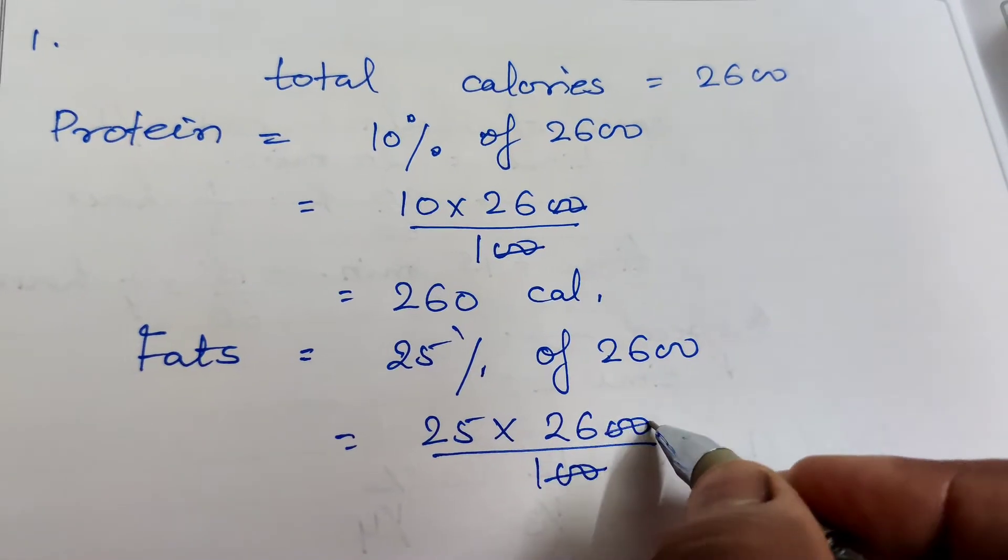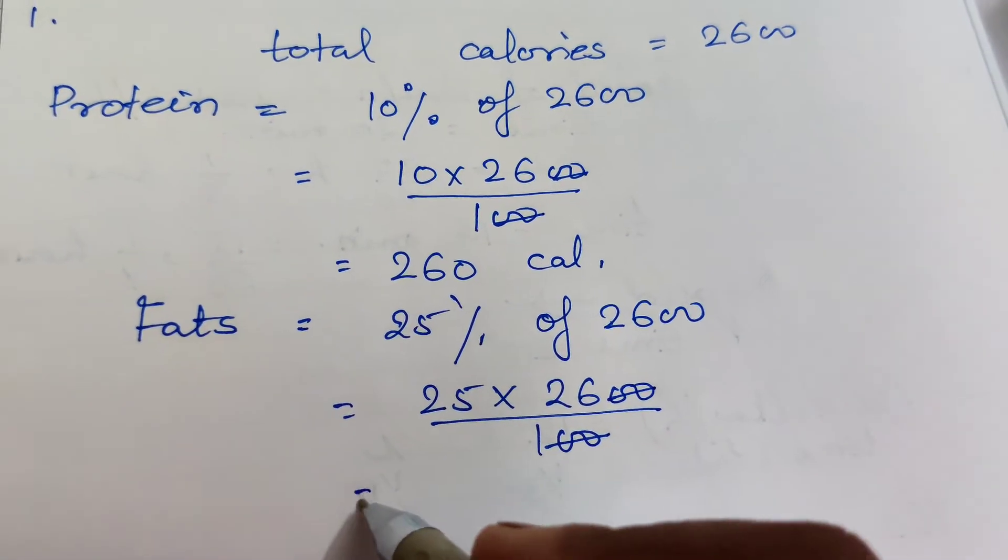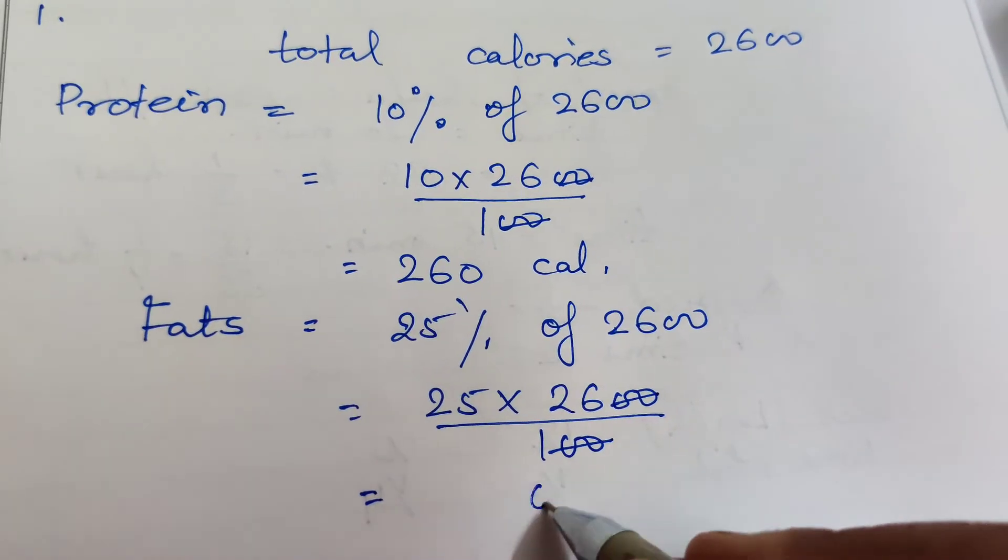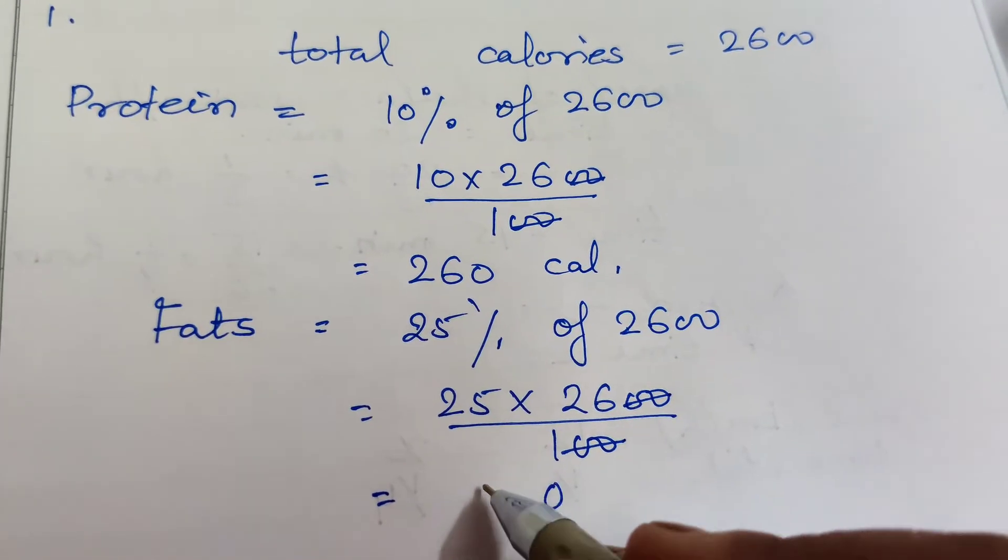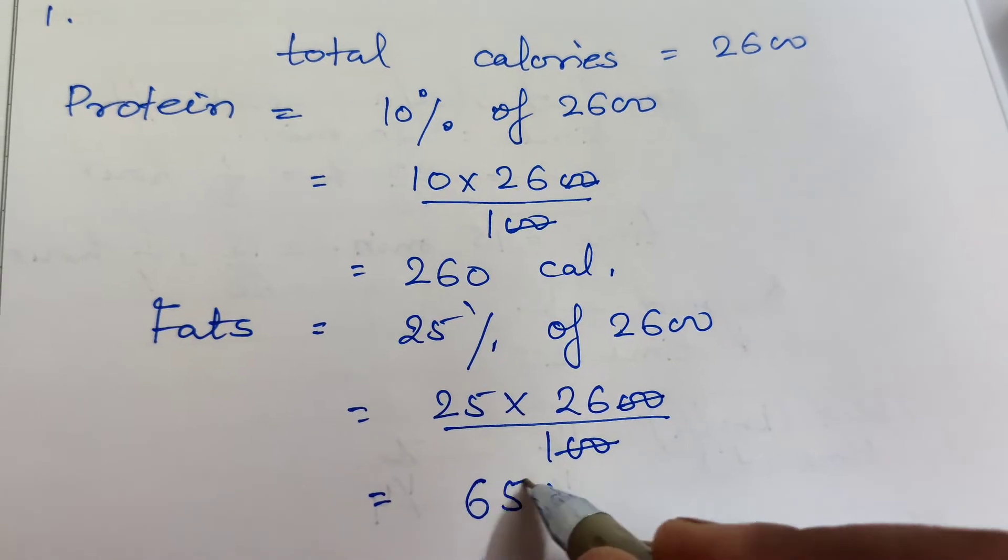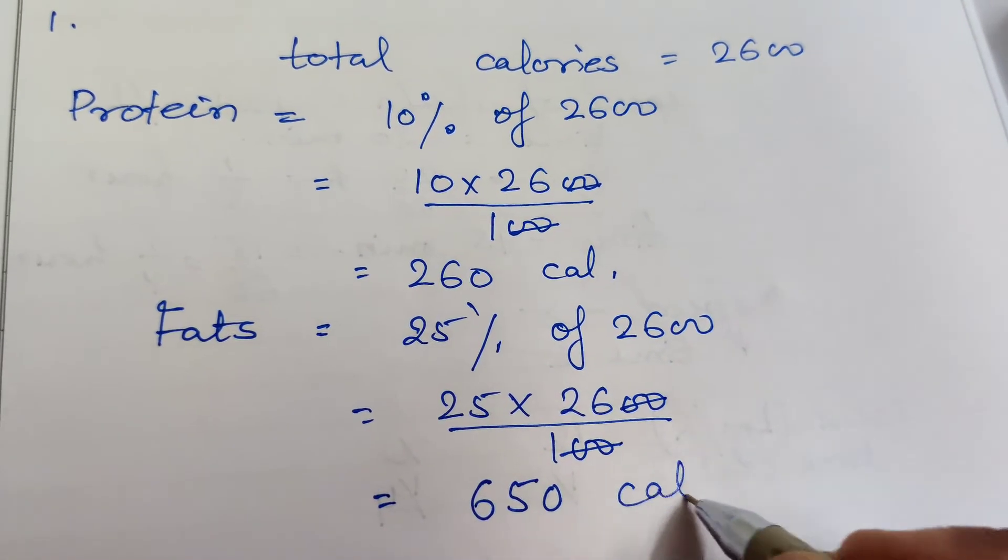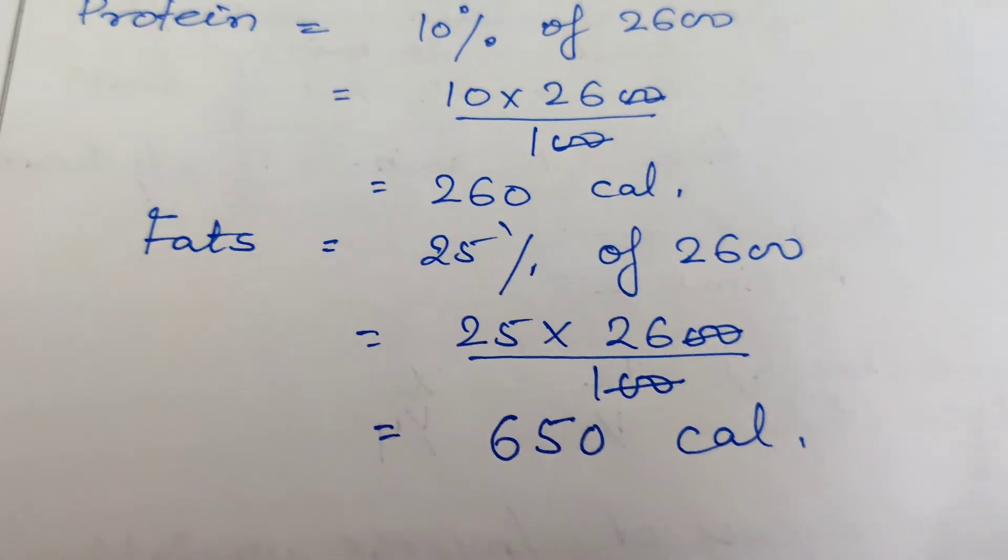Fats equals 25% of 2600, which gives us 650 calories. Now carbohydrates.